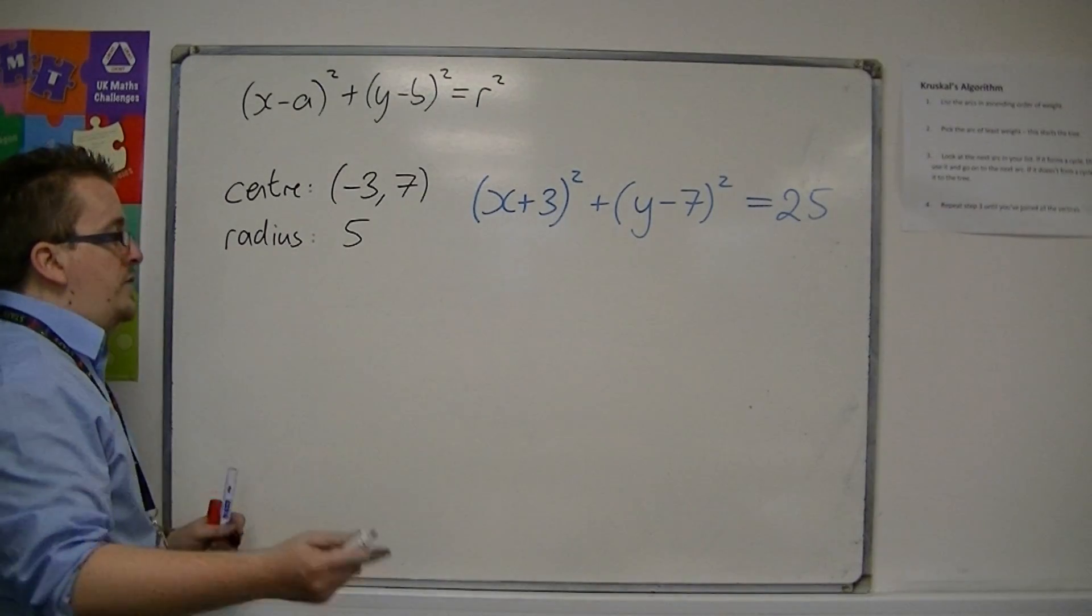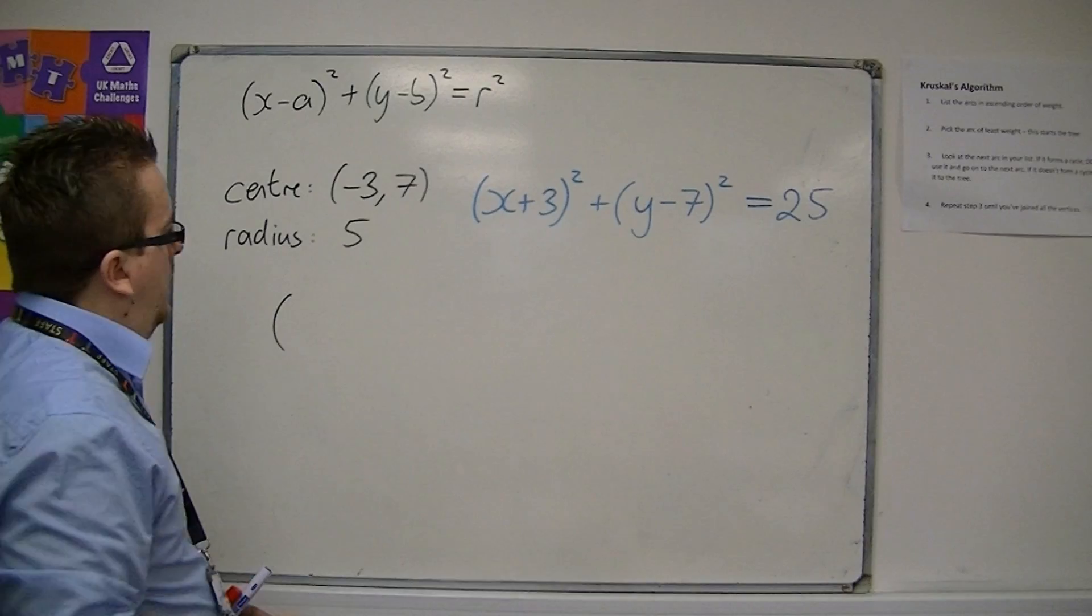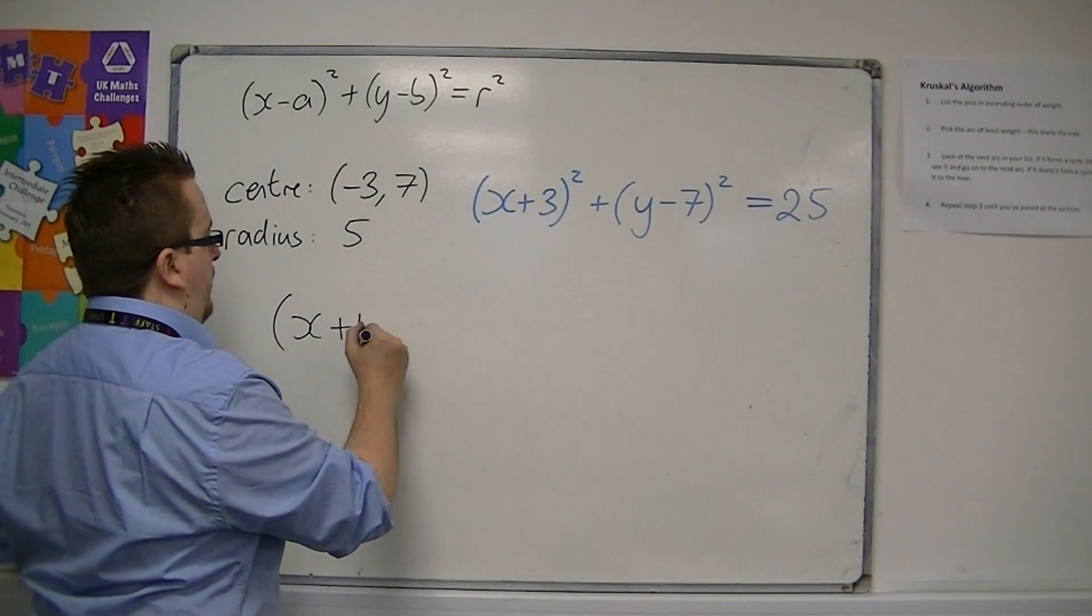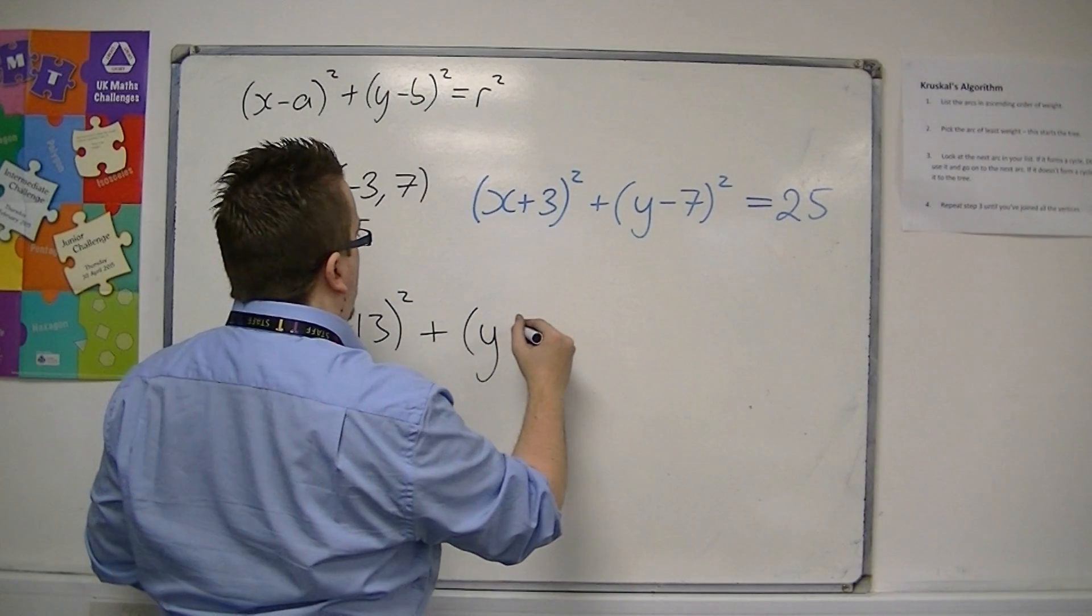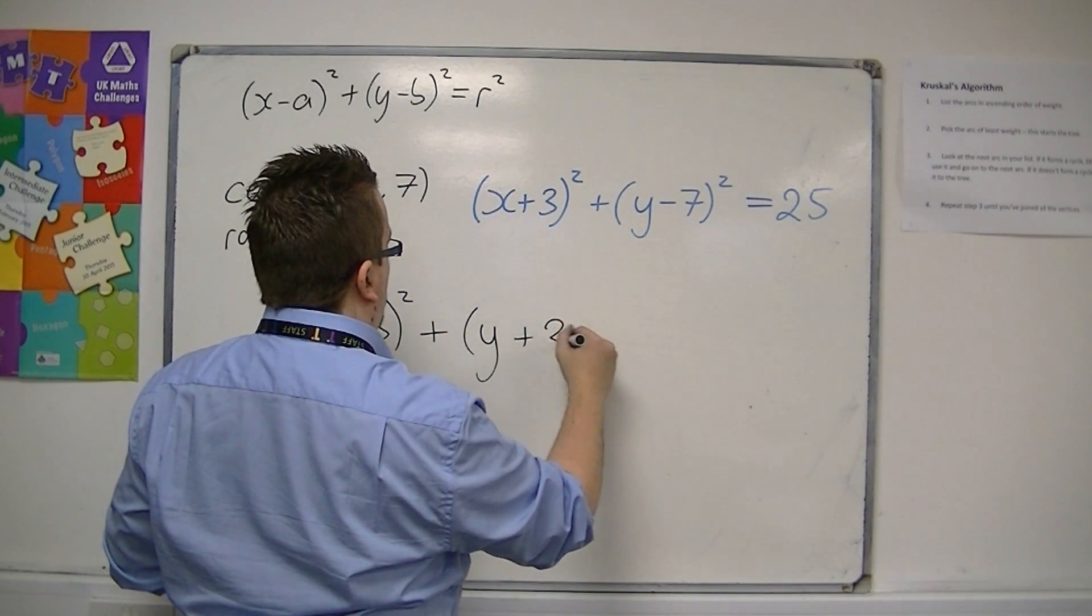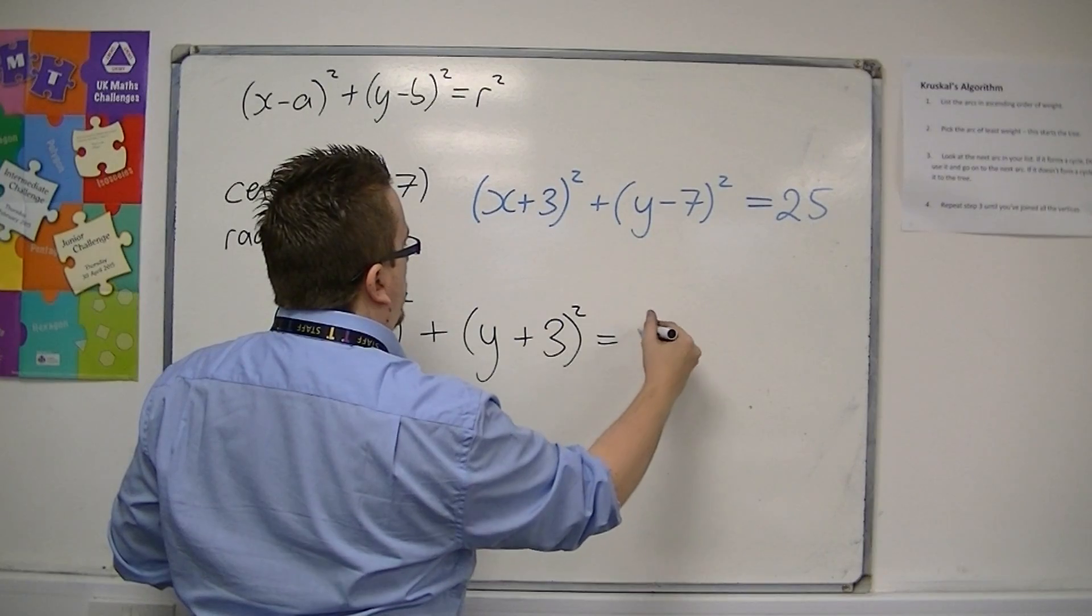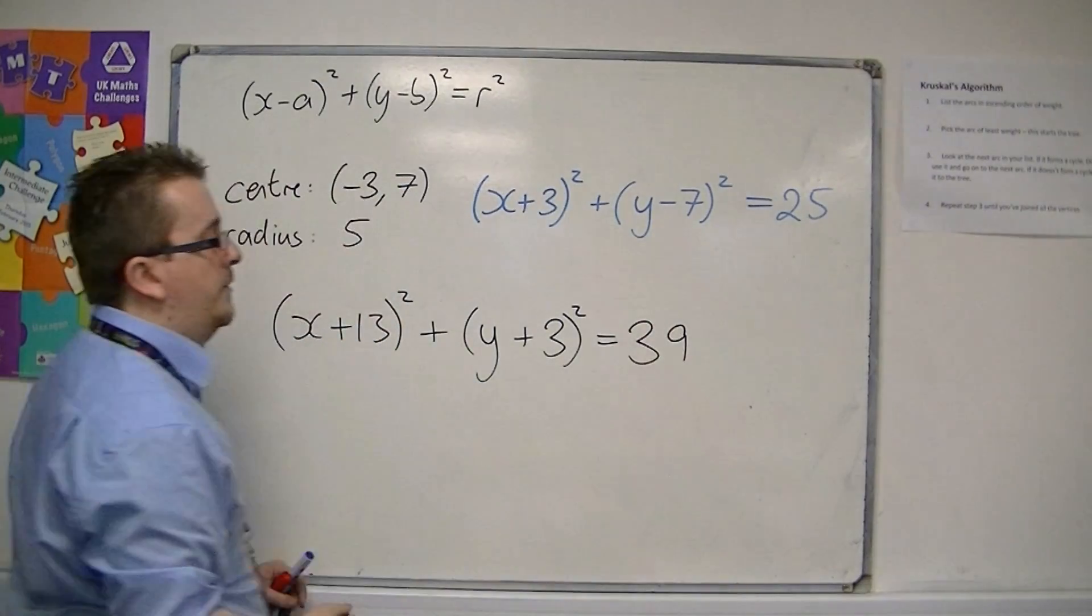If I just wrote down any equation of a circle, for example (x + 13)² + (y + 3)² = 39,